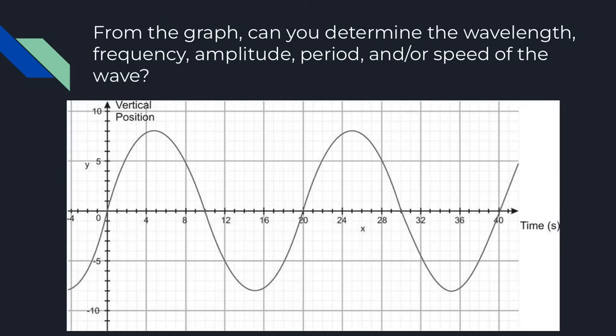I'm going to give you a little introduction to waves and graphs. On each of these graphs we're going to do a couple of things: first, interpret what the graph is telling us, and second, determine some terminology from our previous unit — wavelength, frequency, amplitude, period, and speed when possible. Sometimes some of these won't be possible given the information we have, so we need to be aware of that.